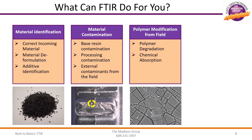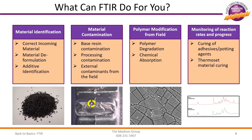FTIR testing can be utilized to investigate modification of a polymeric material due to environmental conditions. This analysis can help to identify root cause of the modifications to a polymer during use. The analysis of these spectra requires knowledge of the degradation byproducts and the corresponding peak locations on the absorption spectrum. Finally, FTIR can be utilized to monitor reaction rates and progress of thermosetting resins, adhesives, and potting agents. This can be utilized during process setup or as a failure analysis tool.